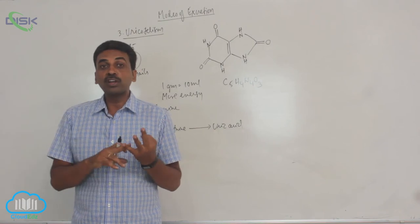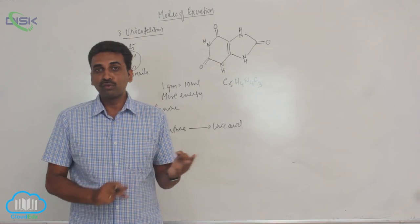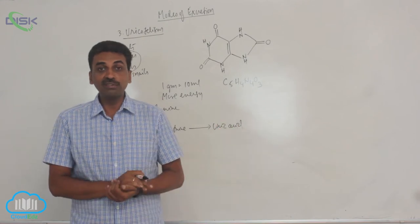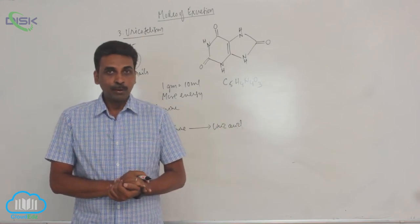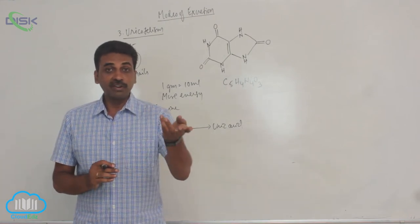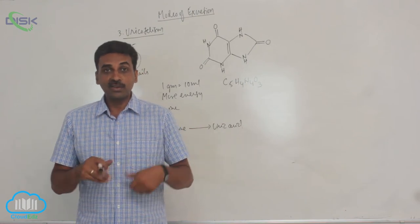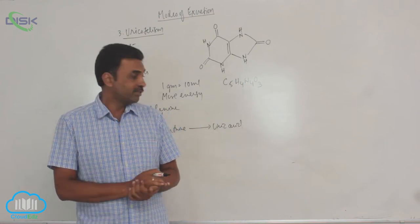Most amount of water is required for excretion of ammonia. Least amount of water is required for excretion of uric acid. Least amount of energy is utilized for excretion of ammonia. But for excretion of uric acid requires highest amount of energy.